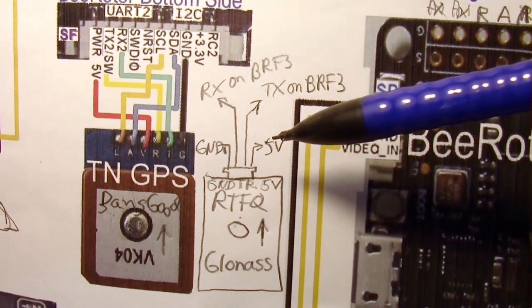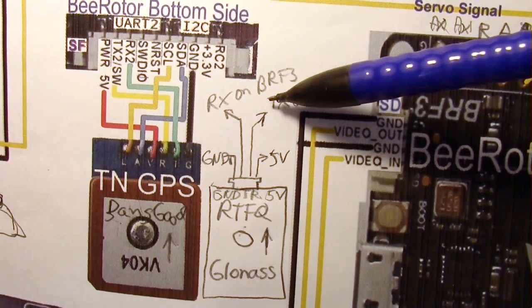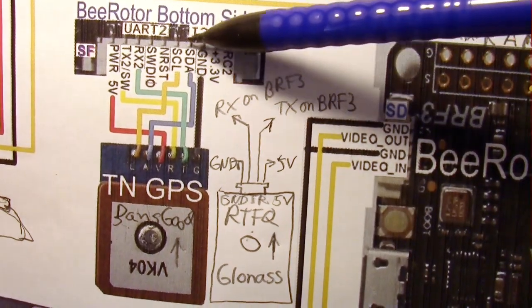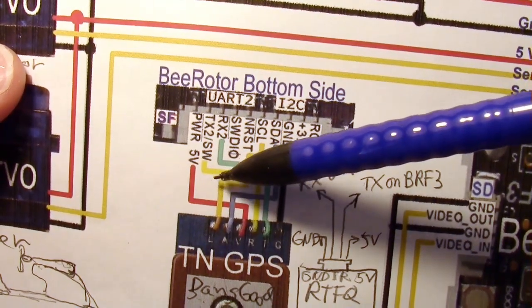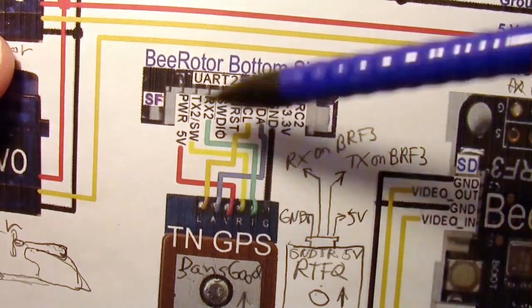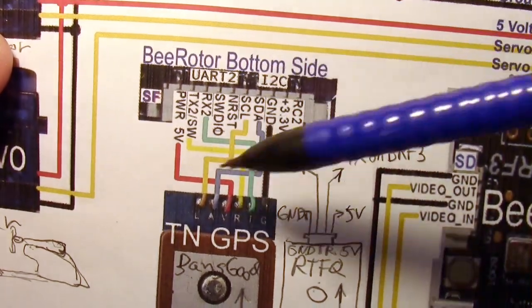And the trick here is that the RX goes to the TX and the TX goes to the RX pins on the B-Rotor. Whereas, when you get to the SCL and the SDA on this one, the SDA actually goes to the SDA and the SCL goes to the SCL, so they're not reversed.